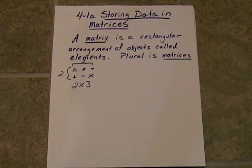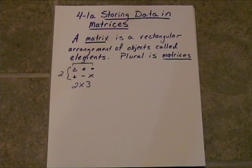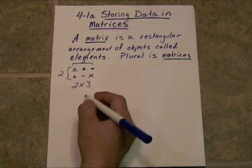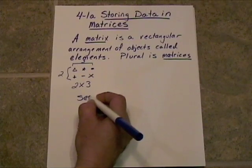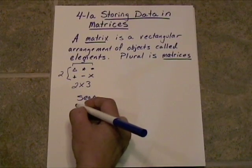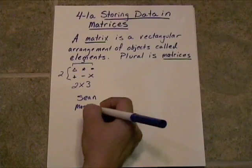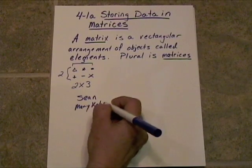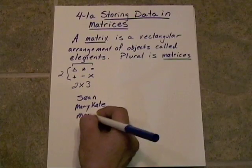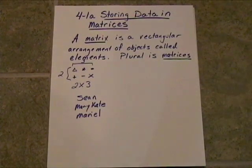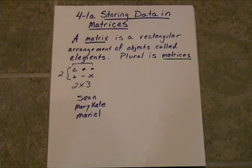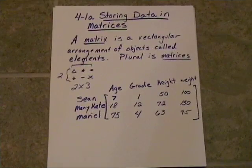So let's take a look at a matrix that's storing data. Let's take some data on Sean, some data on Mary-Kate, and some data on Mariel. We want to put it in a nice, organized form so that we can access it very quickly and efficiently.